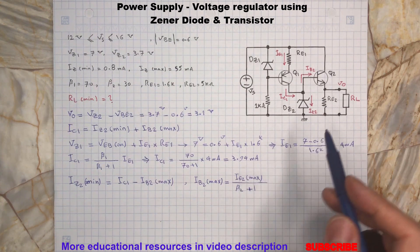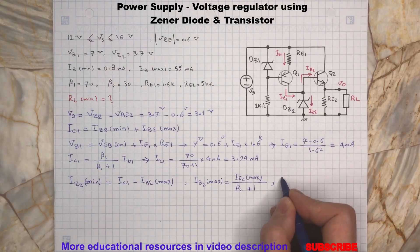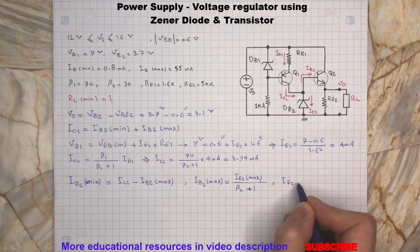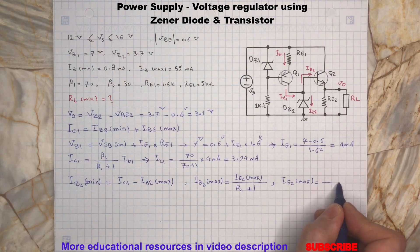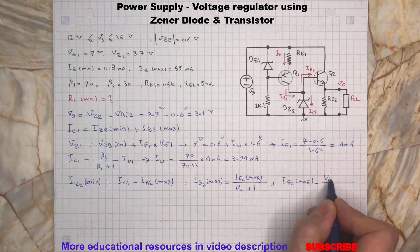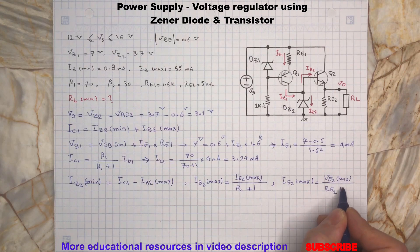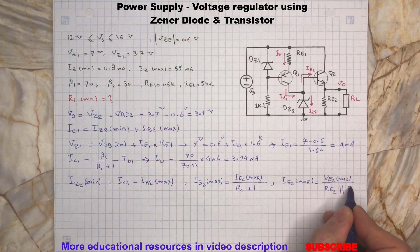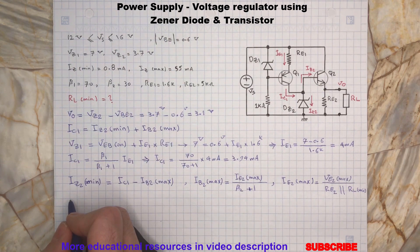And we know that the base current has a following relationship with the emitter current. IE2 is a current flowing through the emitter of the transistor Q2 here. And also IE2 is equals to... where IE2 max is...